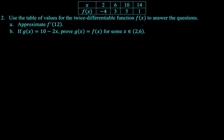Table problem. Use the table of values for a twice differentiable function f of x to answer the questions. All right, part a, approximate f prime of 12. So you look at the table, 12 is between 10 and 14. We're gonna use the slope of the secant line.